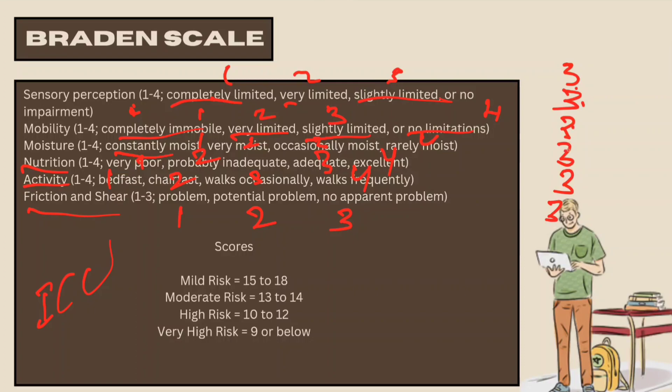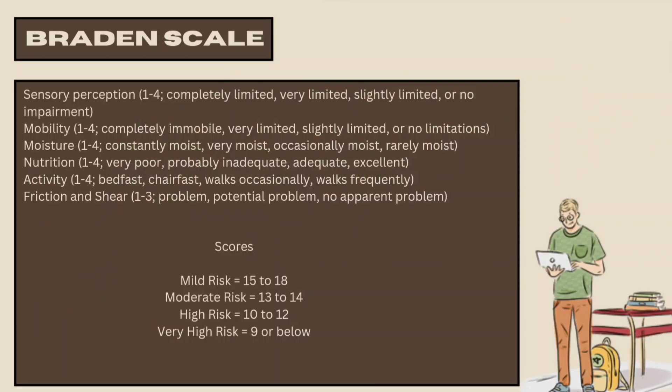For example, a score of 1+2+3+4+5+6 equals 18 — on the Braden Scale, a score of 18 indicates mild risk for the patient.